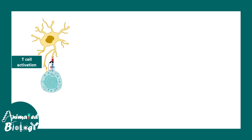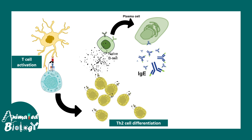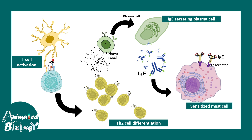It starts with the first exposure to an allergen. At that point, the dendritic cell presents the antigen to the T cell, which eventually proliferates and differentiates into the Th2 subtype. The Th2 subtype secretes cytokines that convert naive B cells into plasma cells, which produce IgE antibodies. Once IgE antibodies are produced, they bind to mast cells via FC receptors, thereby sensitizing the mast cells for future exposures. During this first exposure, there are no visible symptoms.